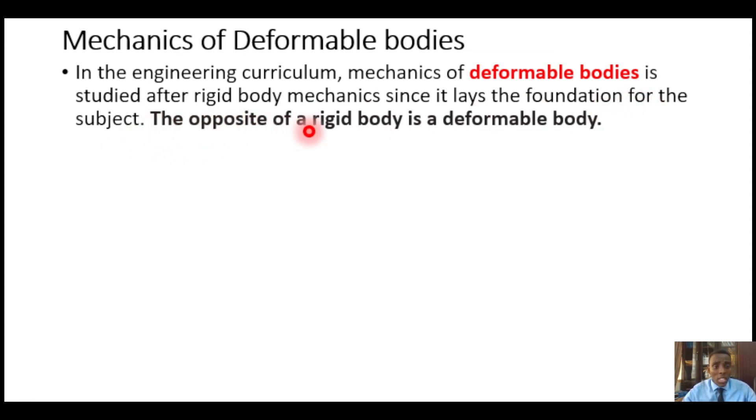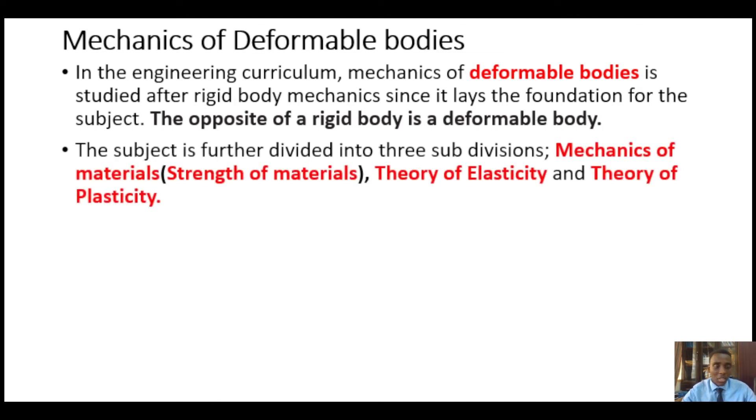Now, the opposite of a rigid body is a deformable body. When you do not deform, it means you are rigid. However, these are actually idealizations. The subject of mechanics of deformable bodies is divided into three subdivisions.